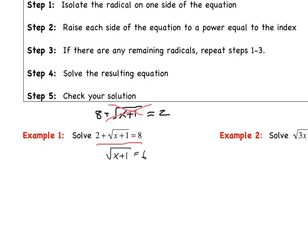Now that we have the radical isolated, we raise each side of the equation to the power equal to the index. Remember, if the index is not written in, it's a 2. So we square both sides of the equation. The square root of x plus 1 squared cancels out, leaving us with x plus 1. And 6 squared is 36. So we solve and get x equals 35.